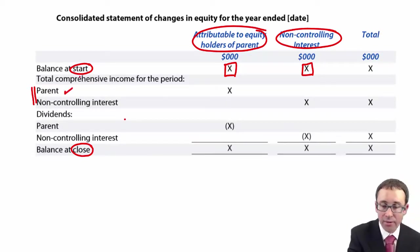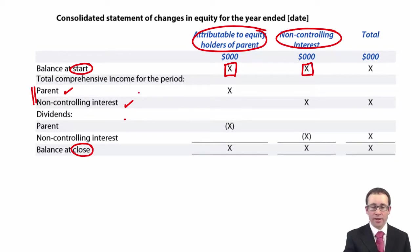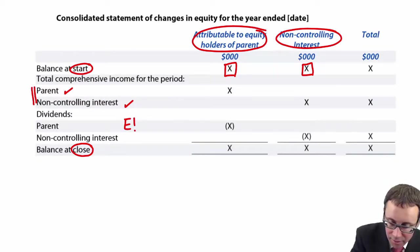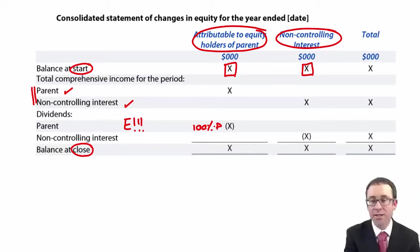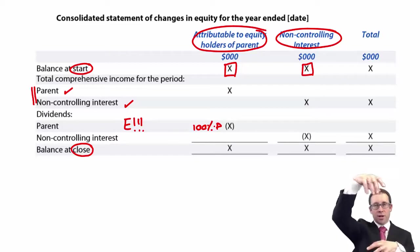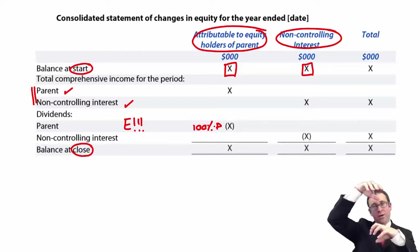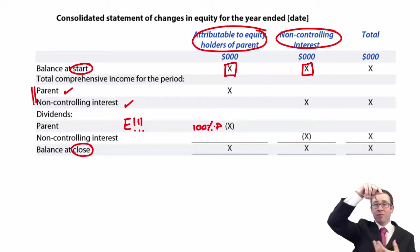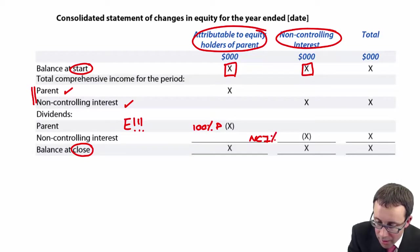You have the amount attributable to the parent and the amount attributable to the non-controlling interest. Then, regarding dividends: if the parent pays a dividend, you put in 100% of the parent's dividend, because all of it goes outside of the group. However, if the subsidiary pays a dividend, some of it stays within the group — the parent gets its share — but the non-controlling interest sits outside the group and gets their share of that subsidiary dividend. So you deduct the non-controlling interest's share of S's dividend.